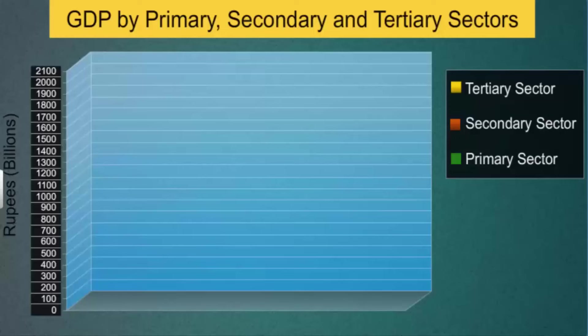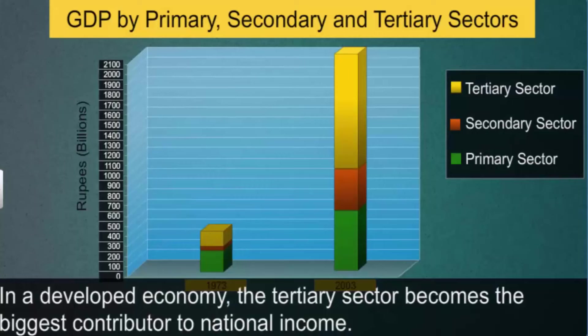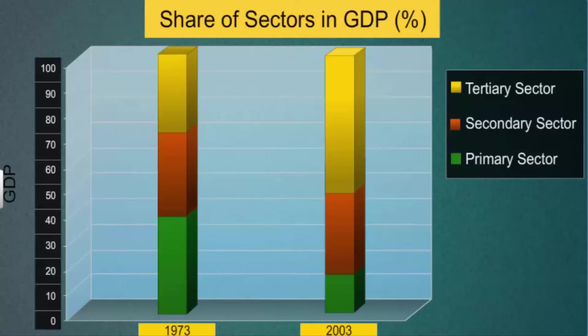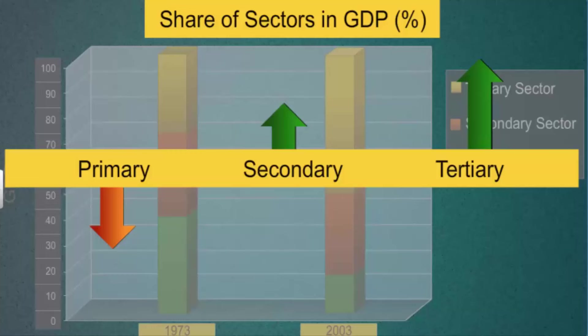The graph shows the change in contributions of the three sectors to India's GDP from 1973 to 2003. Although all three sectors expanded, the tertiary or services sector recorded the largest growth to become the largest sector in India's economy. The data shows a decline in GDP contribution from the primary sector, a marginal increase from the secondary sector, and a significant rise from the tertiary sector.